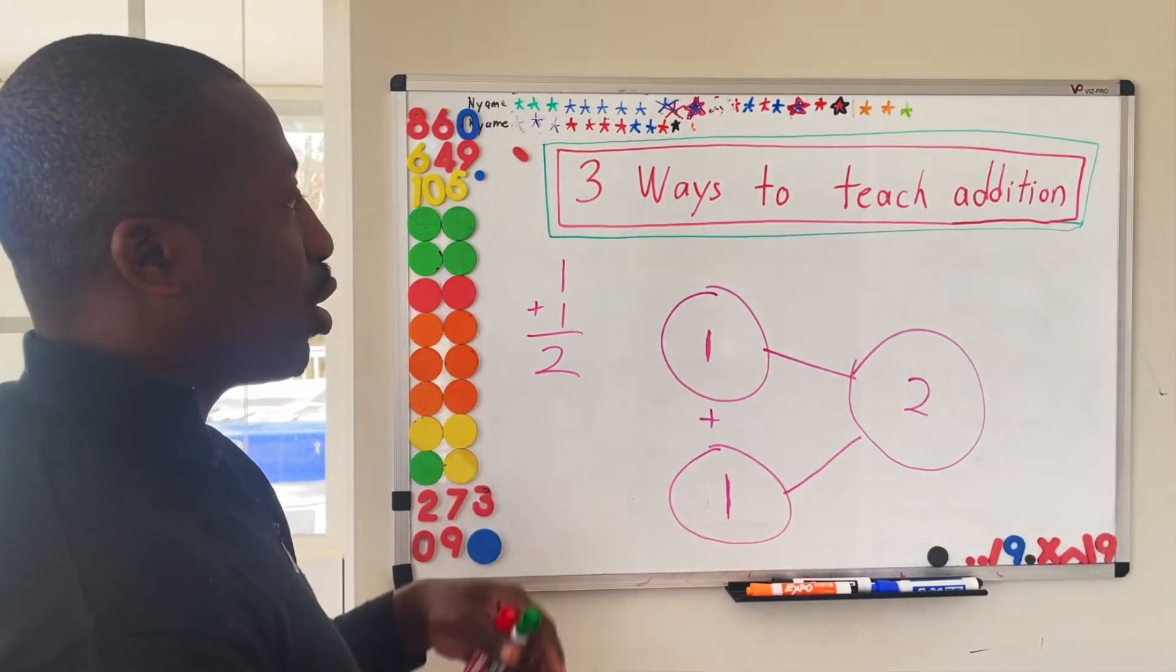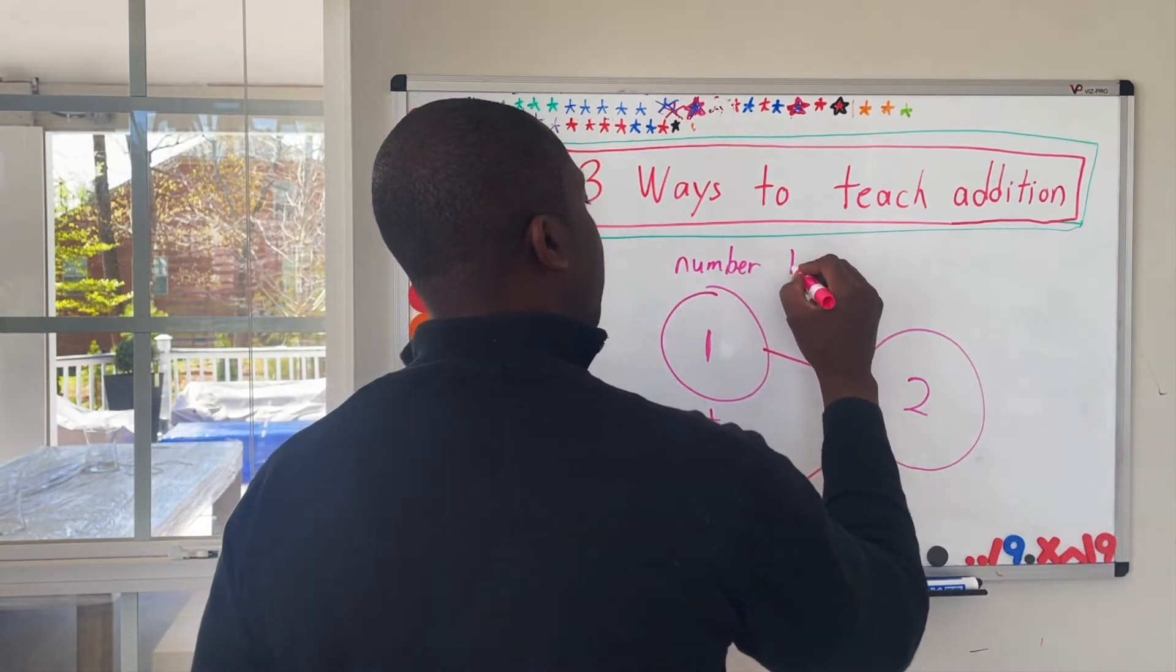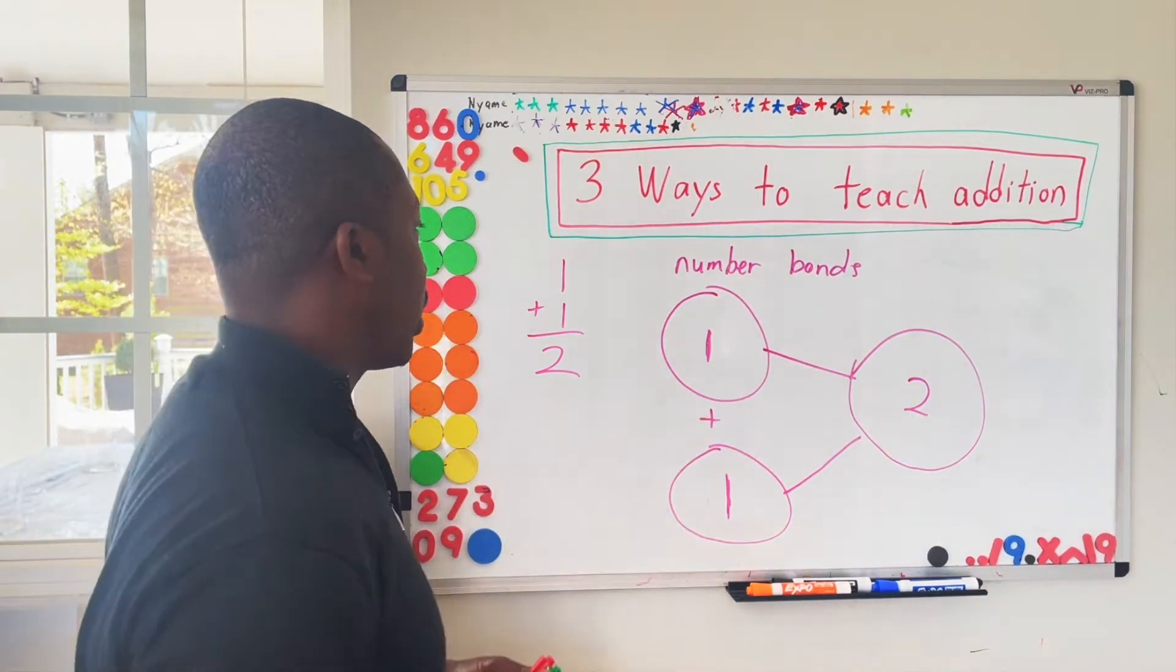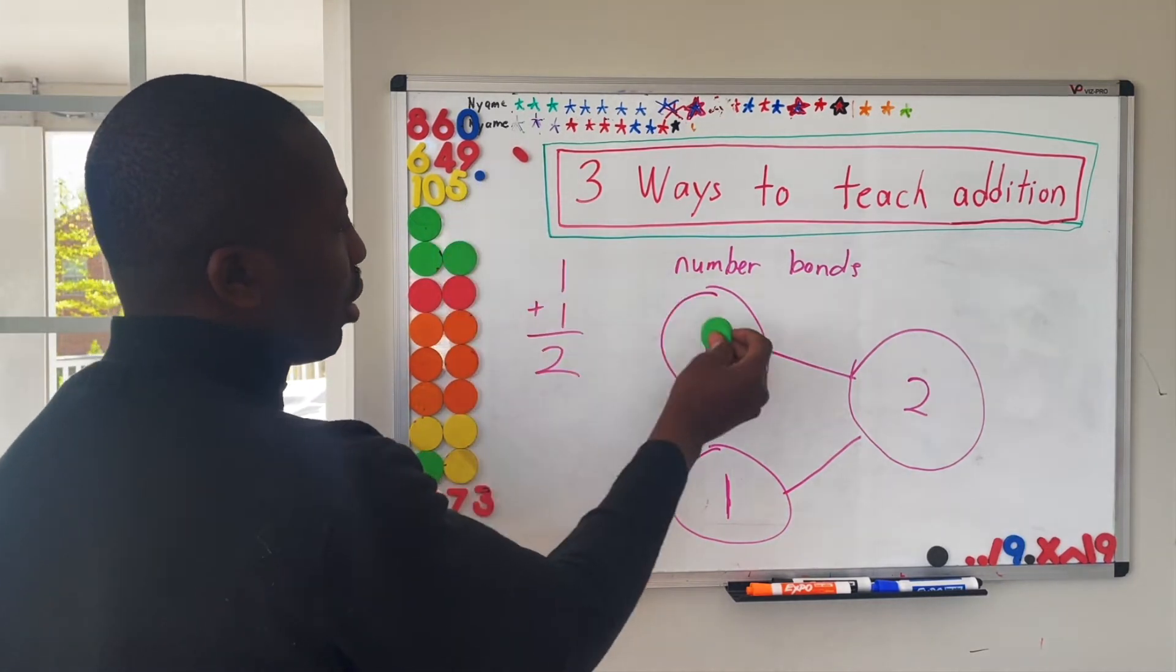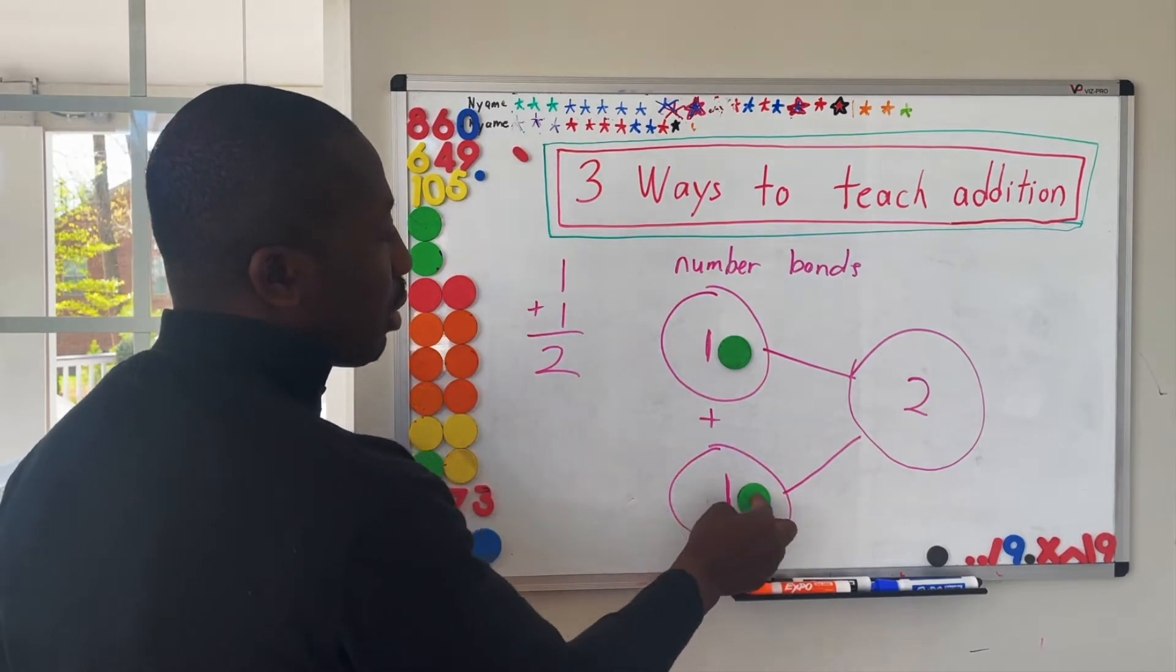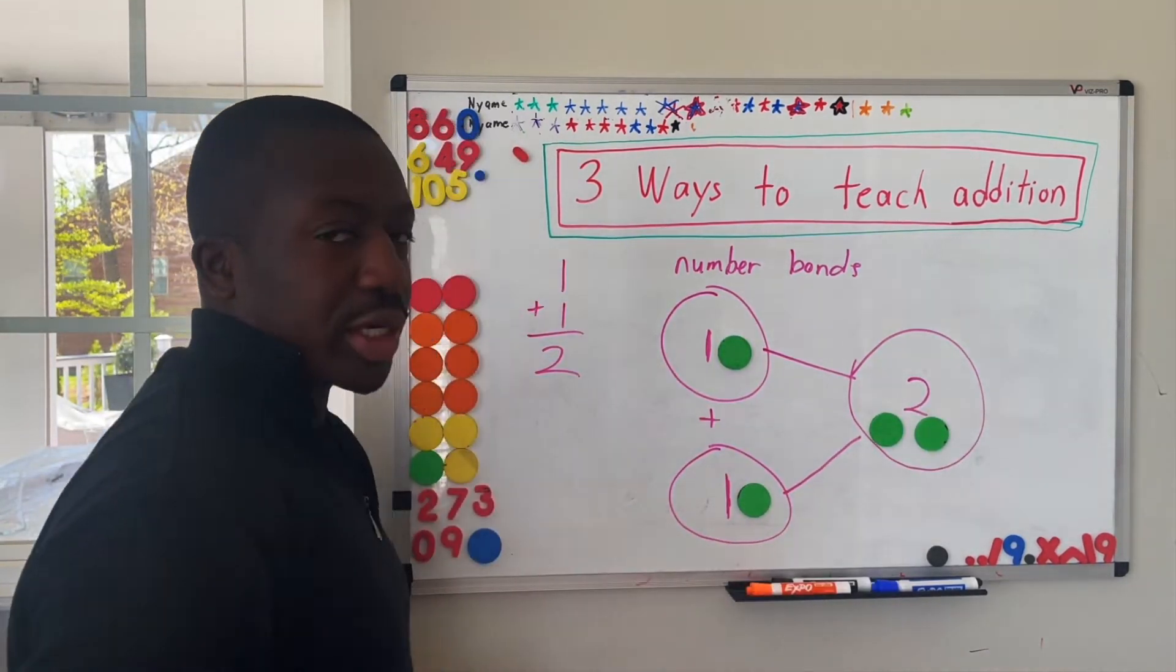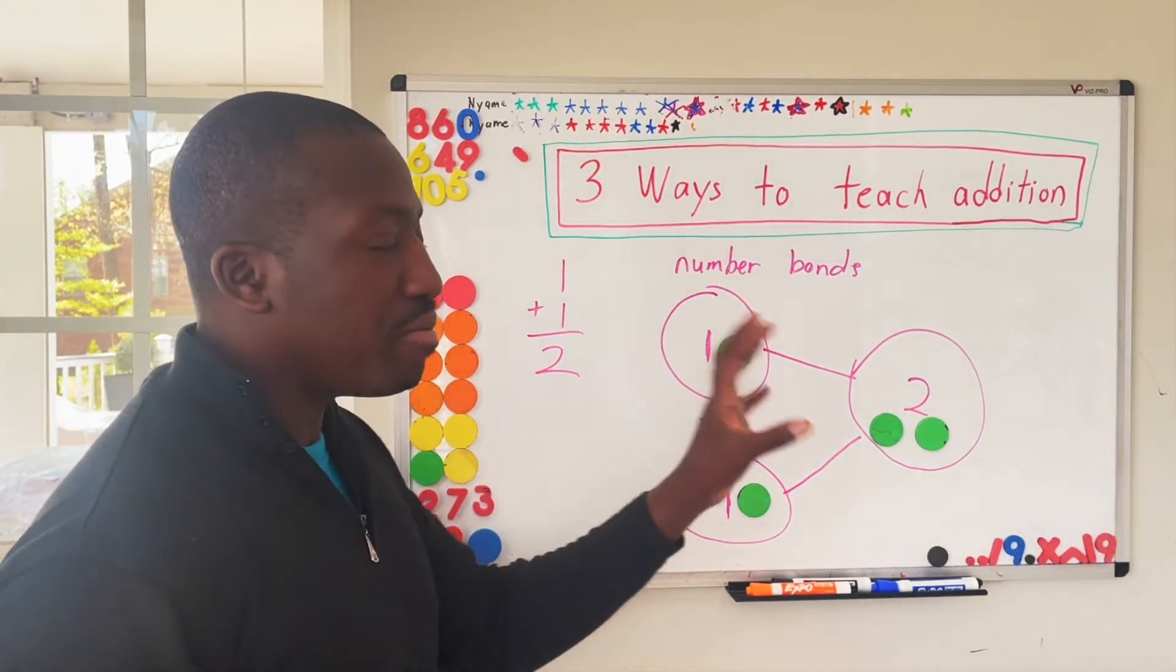So this is called the number bonds method. I'm going to write this here because less people are familiar with this. So in case your child comes home with something like this, at least you know what they're being taught. In this system here, what they're trying to show is the interconnection between those two numbers.